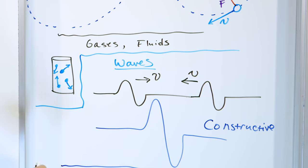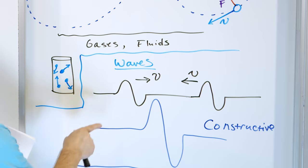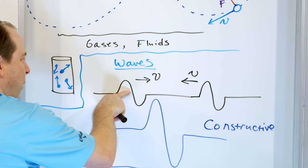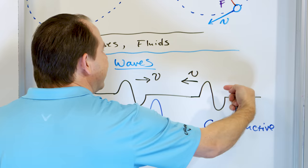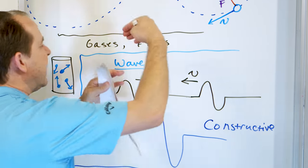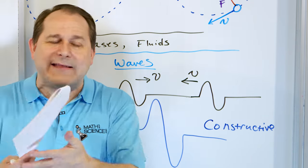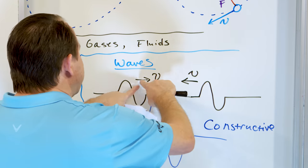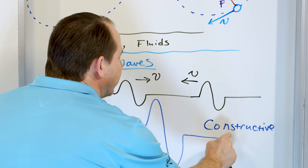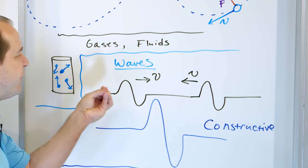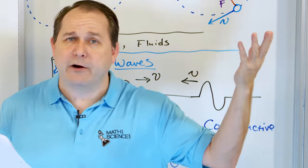We left off talking about waves. This is a wave on a stretched string. When you cause a disturbance we see a wave propagate with some velocity v; we can cause another wave to go the other way and these waves can collide and interact - we add them together. If the crests line up together and the troughs line up together, we end up with a bigger wave. This is called constructive interference because they're adding together and making the wave bigger.